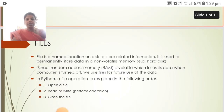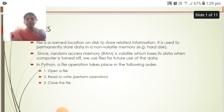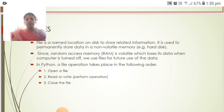In this unit, we are going to see about files. A file is a named location on disk to store related information. It is used to permanently store data in a non-volatile memory, that is an external hard disk. Since random access memory (RAM) is volatile, which loses its data when the computer is turned off, we use files for future use of the data.